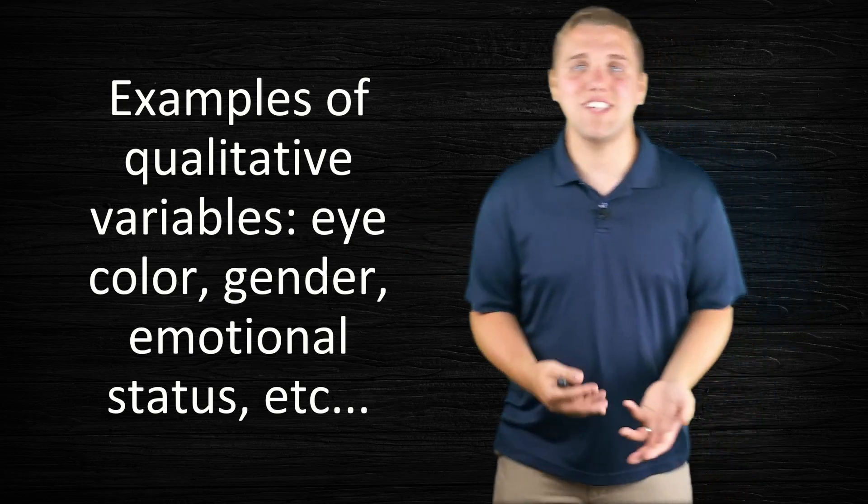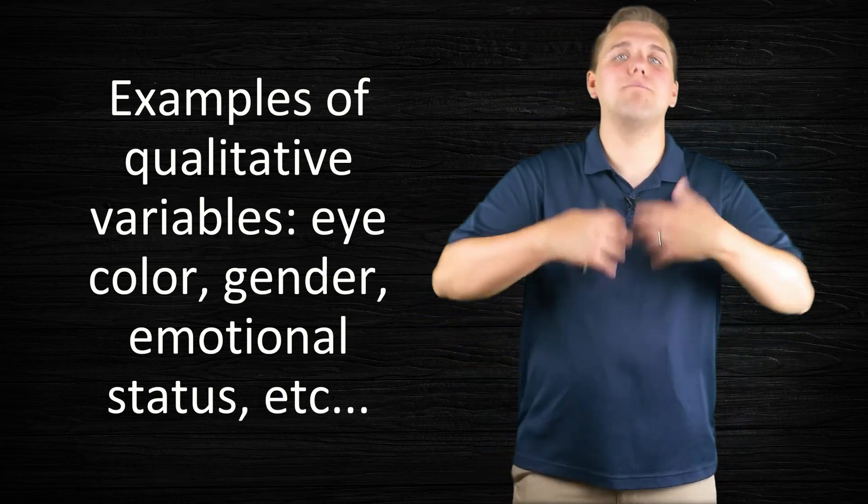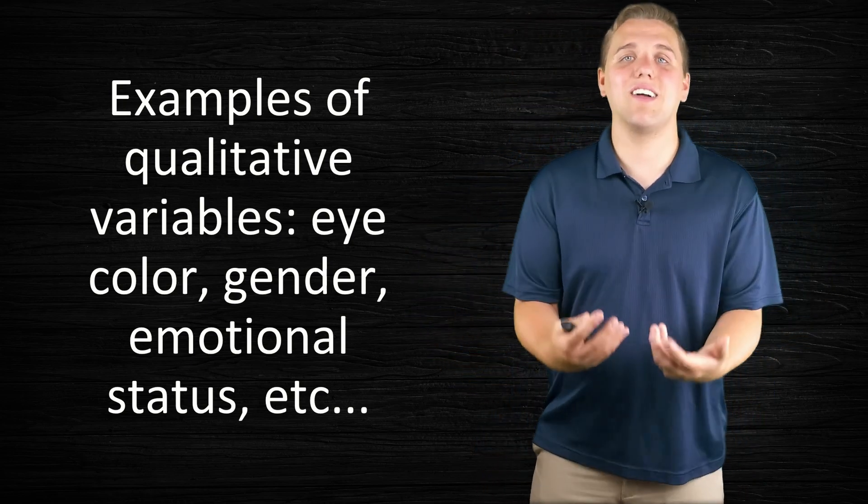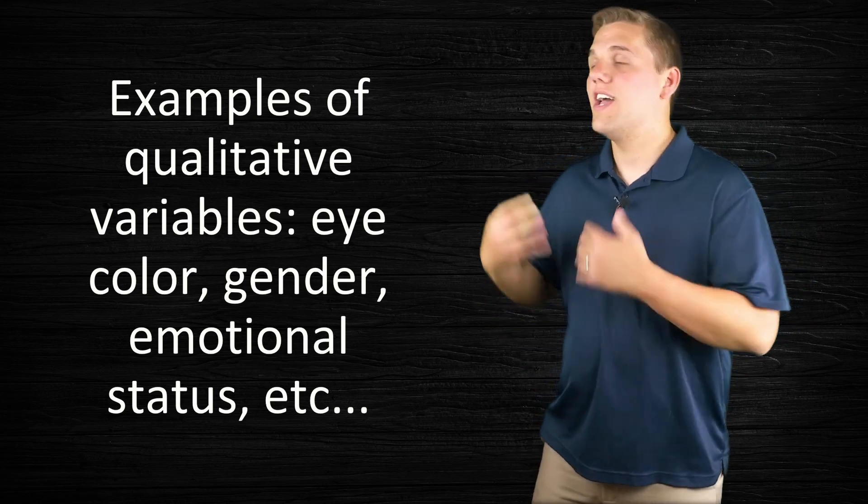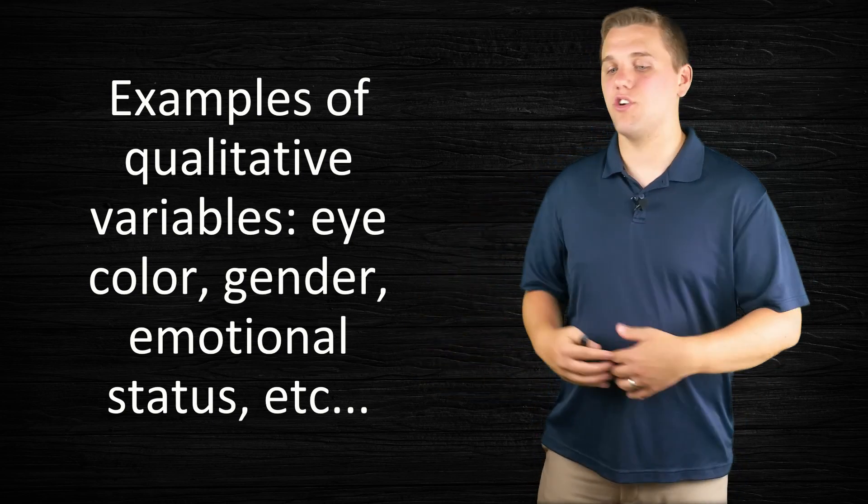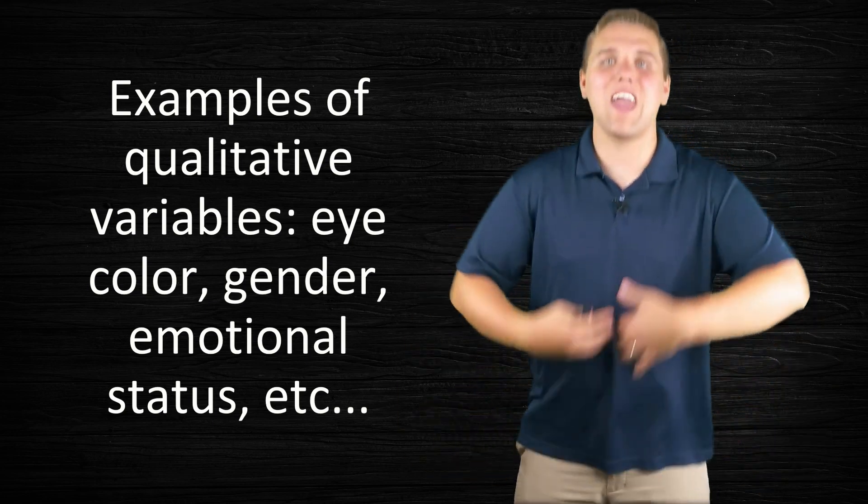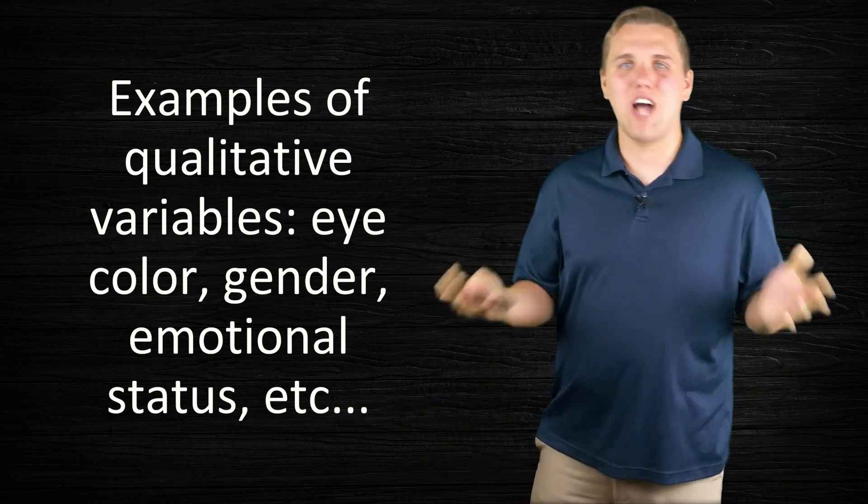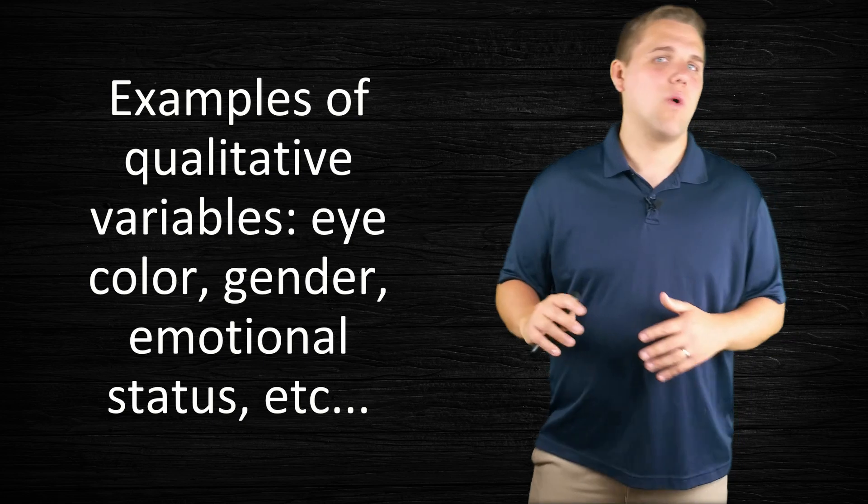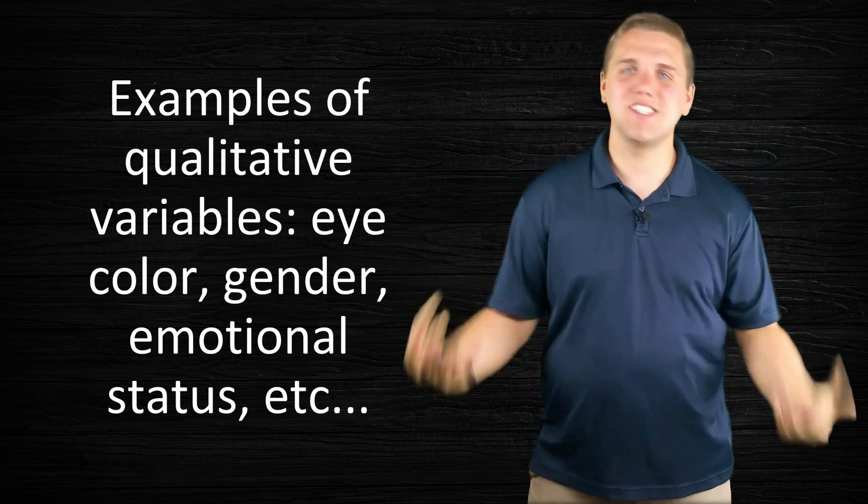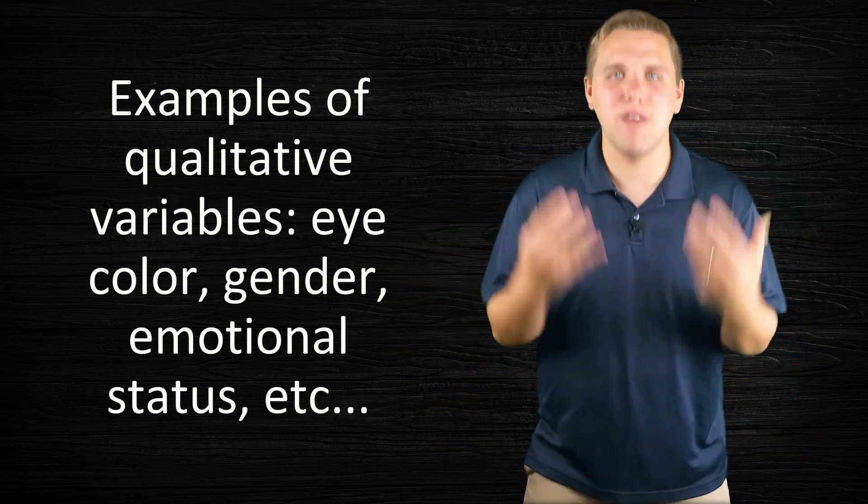Here are some examples of qualitative variables - things that you can't really measure with a ruler like eye color. It's descriptive in nature. Gender is descriptive in nature. Emotional status - maybe you're angry, maybe you're sad. You can't really measure it. Doctors might try to measure that last one on a scale of one to ten, but it's still descriptive in nature. You can't really measure it with a ruler.